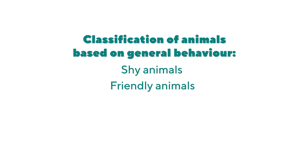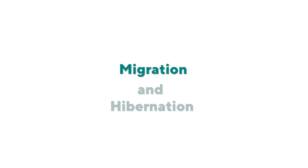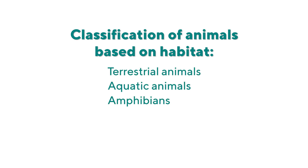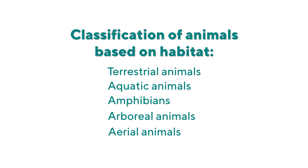To summarize: we learned about types of animals based on general behavior — shy, friendly, social, and mutual helpers. We learned about migration and hibernation. Then we covered classification of animals based on habitats: terrestrial, aquatic, amphibian, arboreal, and aerial animals, along with their adaptations. That's all for this unit — see you later, bye bye!